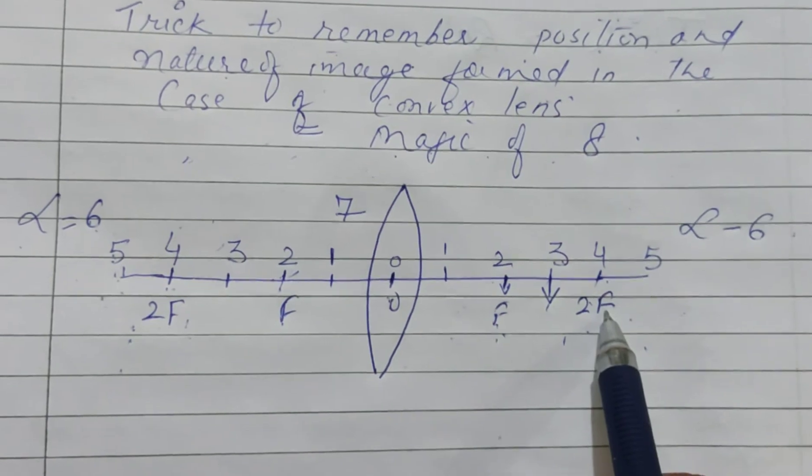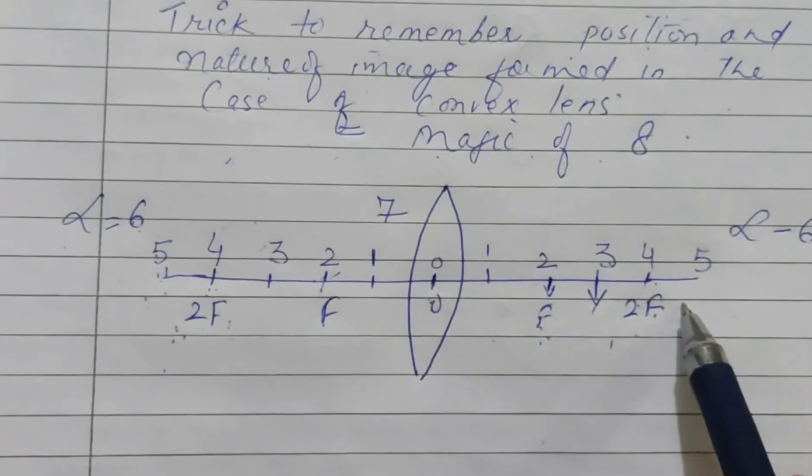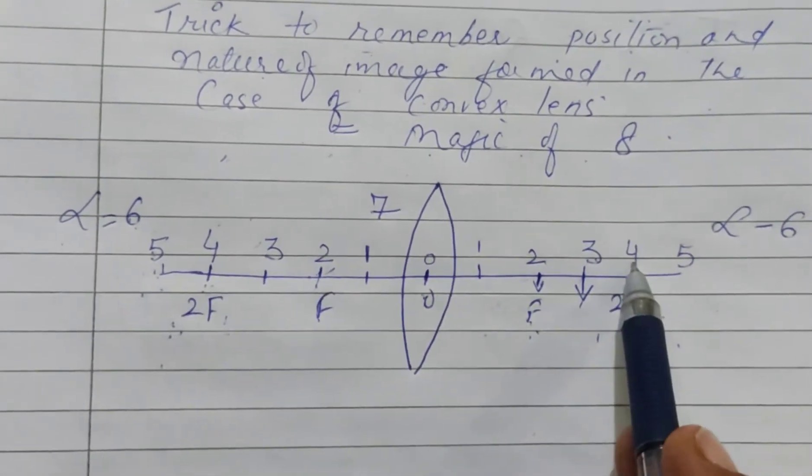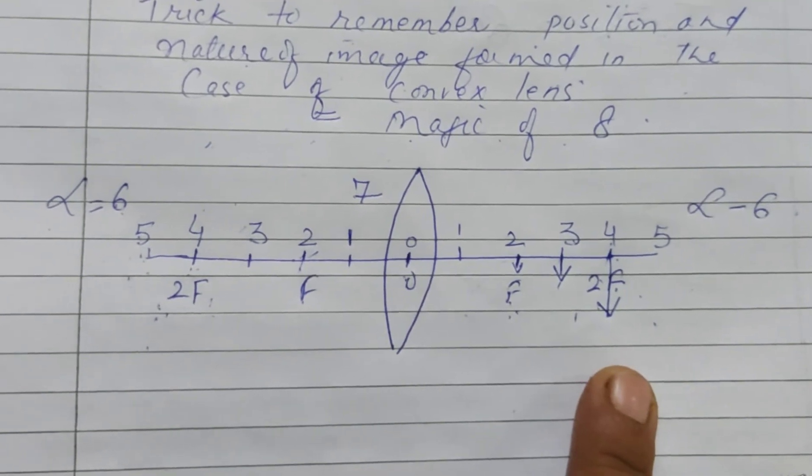Now we come to point 4—2f. So 4 and 4 add up to give 8. That means at 2f, a real and inverted image will be formed at 2f which is of same size.